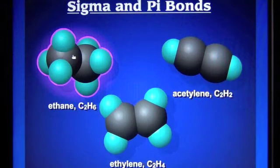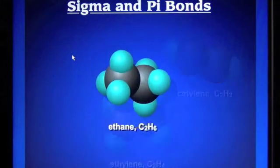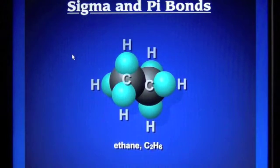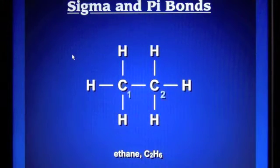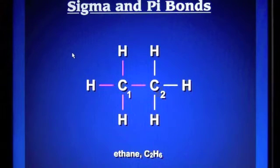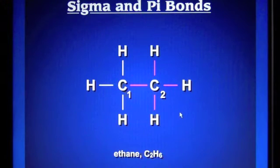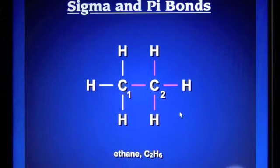Let's look at the bonding in ethane. To understand the bonding in ethane we're going to need to take a look at its Lewis structure. If we draw the Lewis structure for ethane we're going to see that there are four areas of high electron density around each one of the carbons. Around carbon 1 and carbon 2 we have four areas of high electron density, and anytime you have four areas of high electron density around a central atom that is a tetrahedral arrangement.